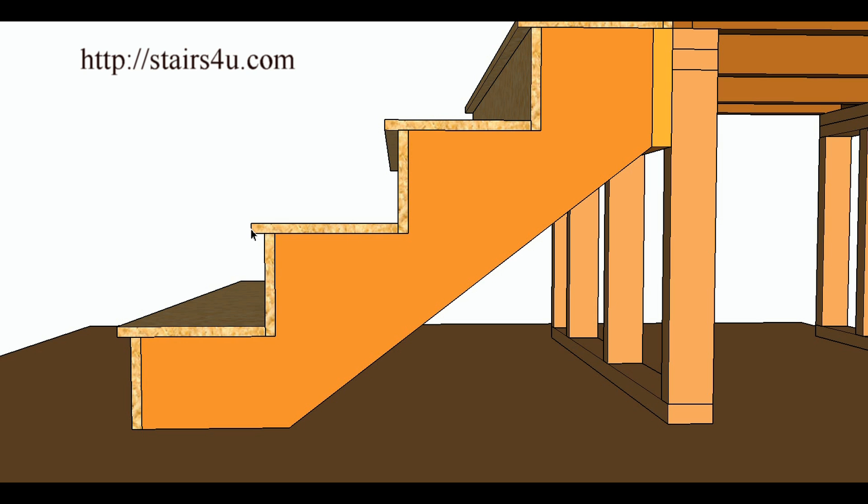And last but not least, the surefire way to figure this out—you're never going to be wrong—is to go from the face of the step, which in this case would be the overhang, the front of the tread, to the front of the tread. So this is always going to be the same.